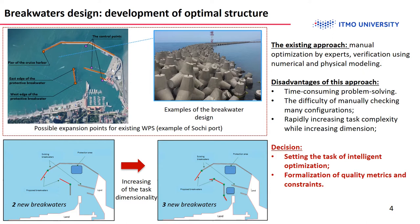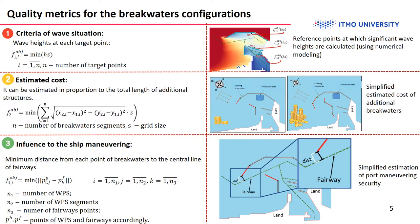To apply numerical optimization, we should formalize the quality metrics and constraints. Different metrics can be used to describe the acceptability of each breakwater configuration. The first criterion, quite obvious, depends on wave height and describes the protective efficiency of the selected configuration. The second one is the estimated cost of construction — a larger breakwater costs more to build. This is a simplified estimation, as building cost also depends on hydrology and other parameters, but it is a good initial estimate to compare solutions.